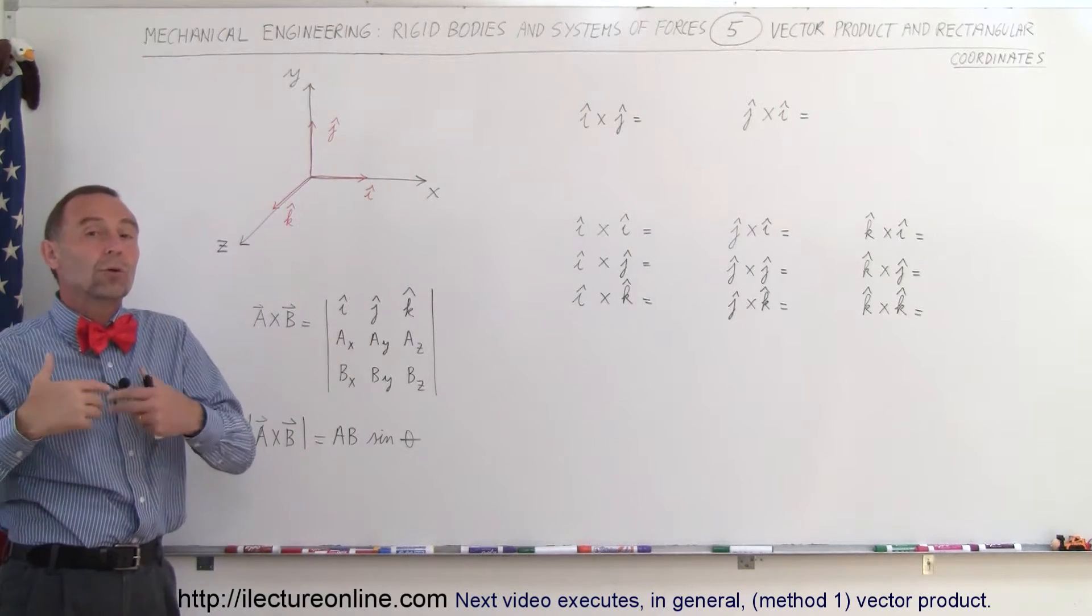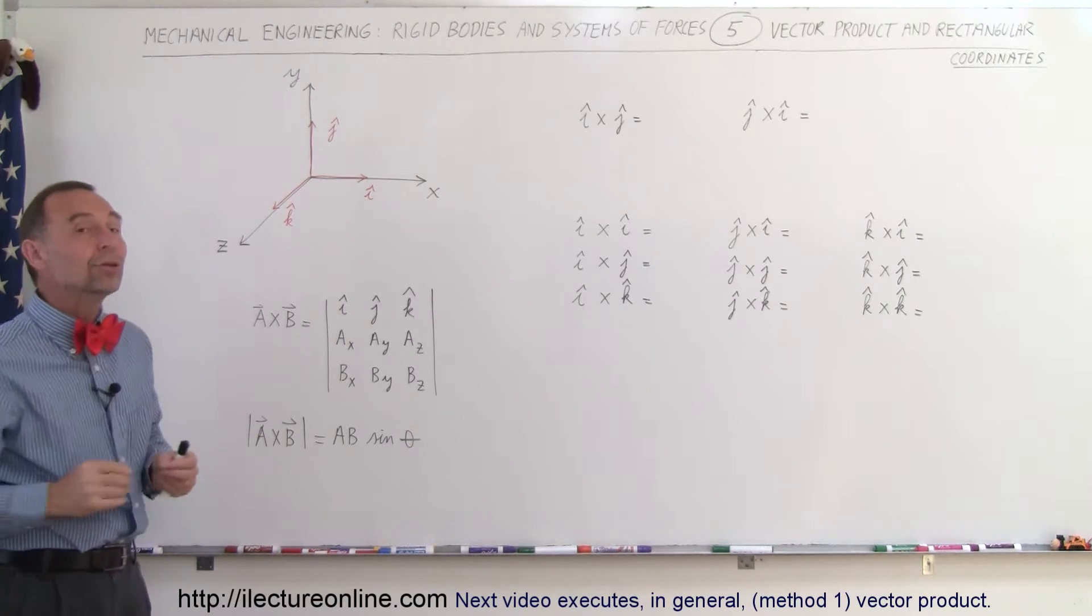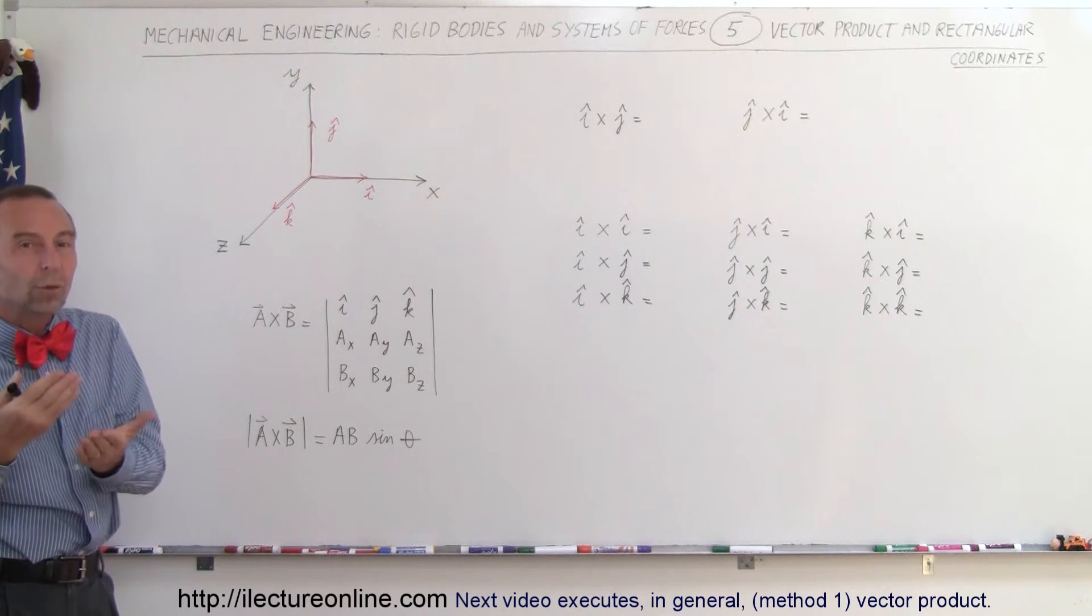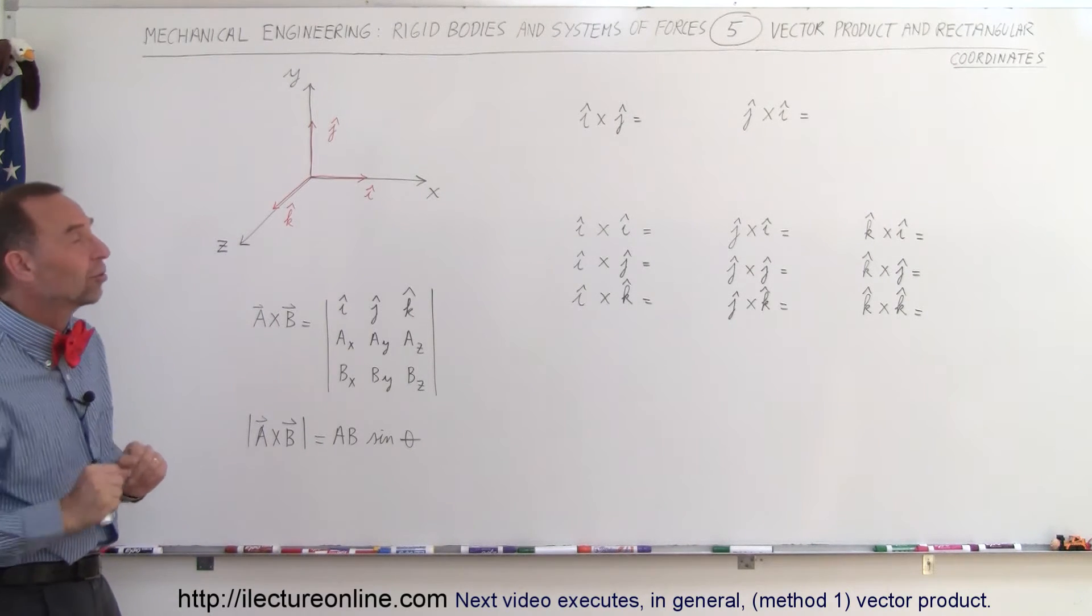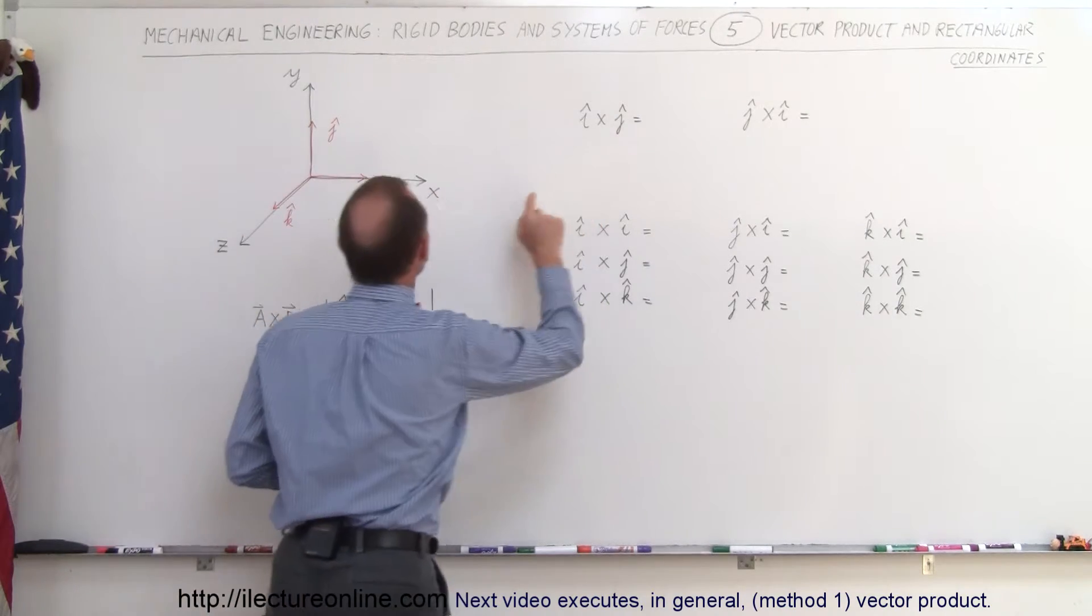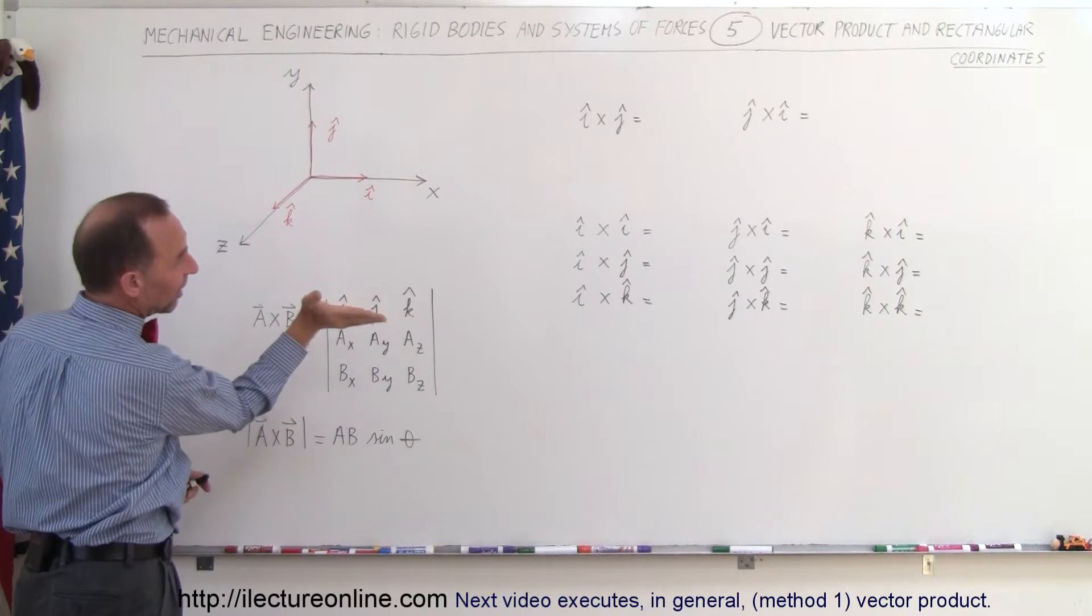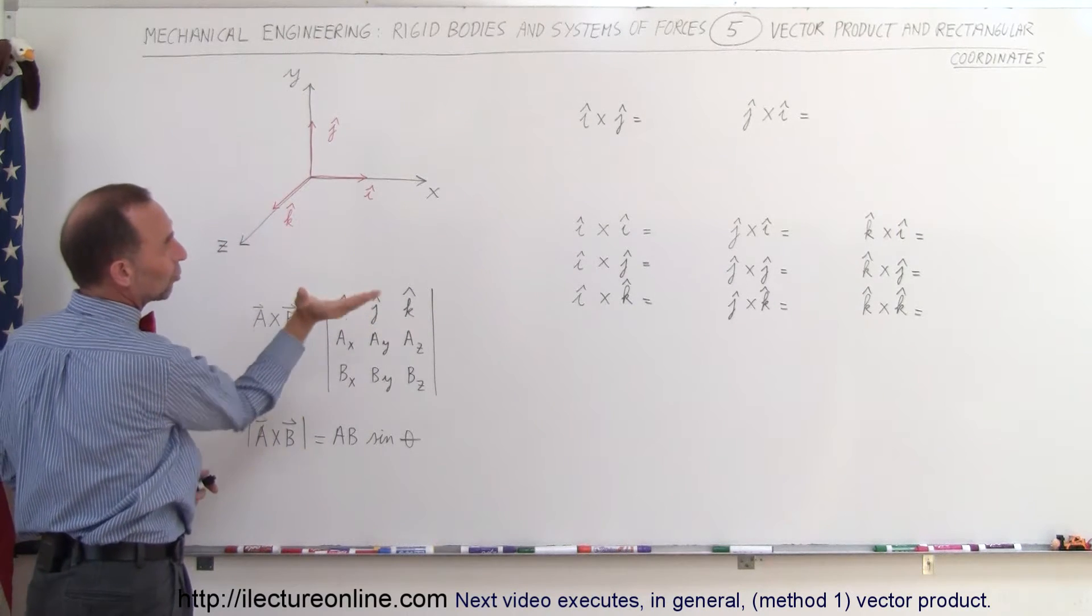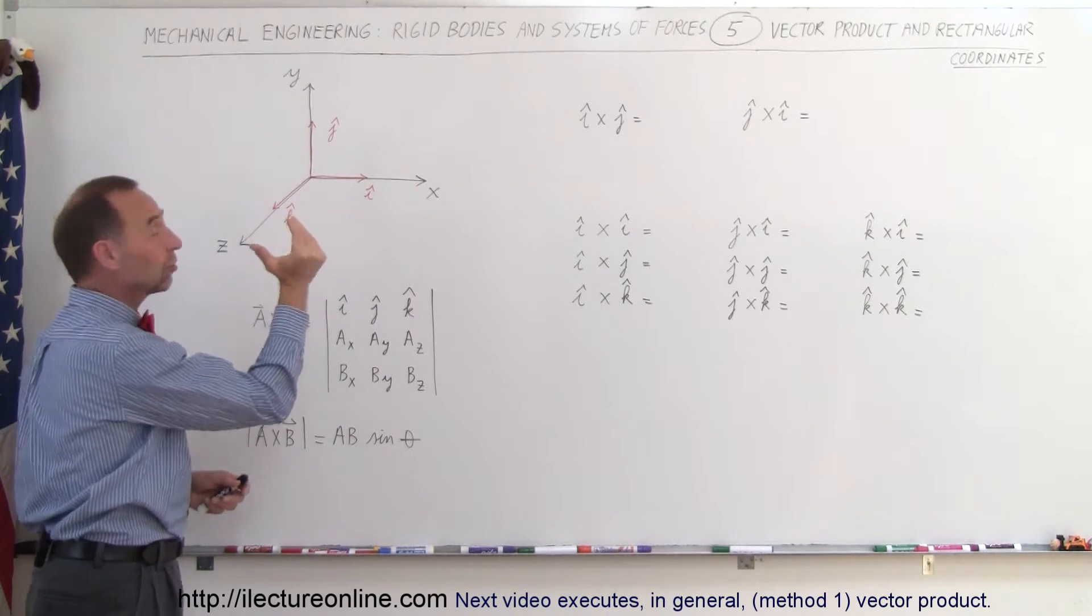So what happens when we do cross products on these three unit vectors? The result is one of the other unit vectors or zero depending upon the situation. For example, let's say we do I cross J. When we use our right-hand rule, we point our fingers in the direction of the vector I, then we curl our fingers towards the direction of vector J, and then our thumb points in the direction of the result.